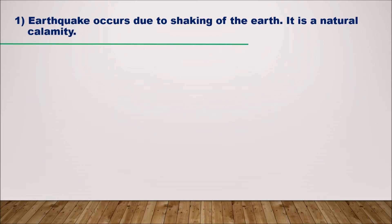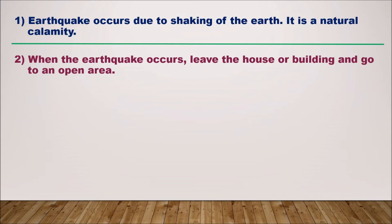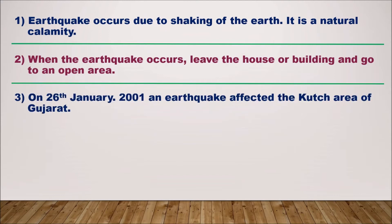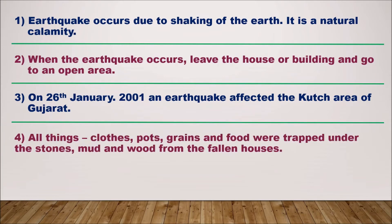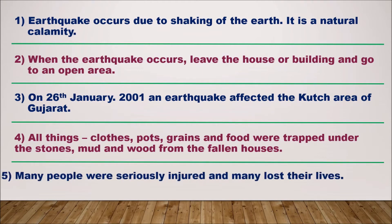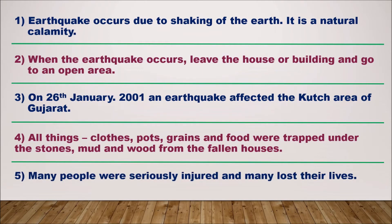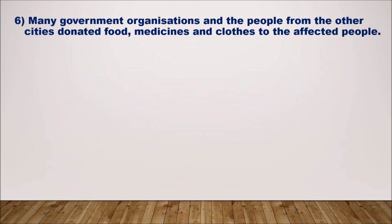Earthquake is a natural calamity. When the earthquake occurs, leave the house or building and go to an open area. On 26th January 2001, an earthquake affected the Kutch area of Gujarat. All things — clothes, pots, grains, and food — were trapped under the stones, mud, and wood from the fallen houses.